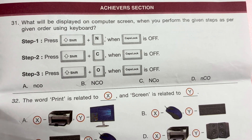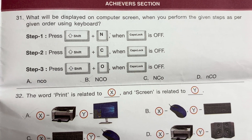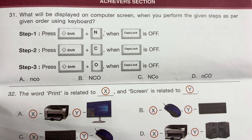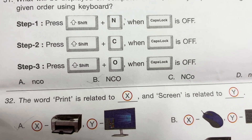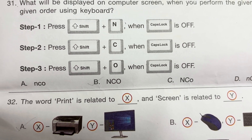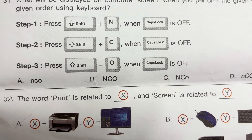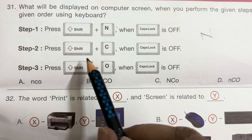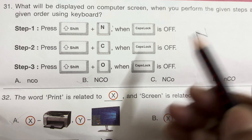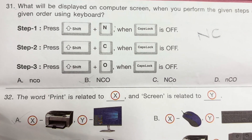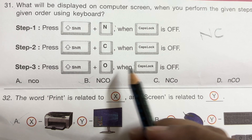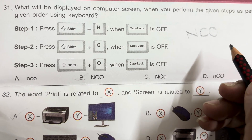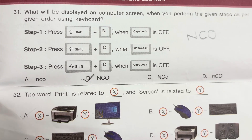Achiever Section. Question 31: What will be displayed on the computer screen when you perform the given steps using the keyboard? Step 1: Press Shift + N when Caps Lock is off — capital N. Step 2: Press Shift + C when Caps Lock is off — capital C. Step 3: Press Shift + O when Caps Lock is off — capital O. Answer is NCO. Answer is B, all in capital letters.